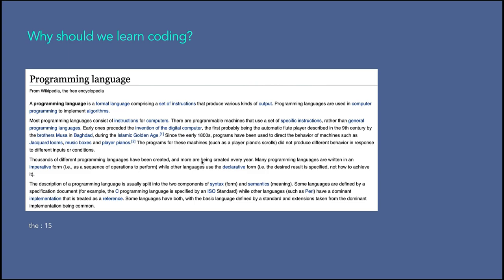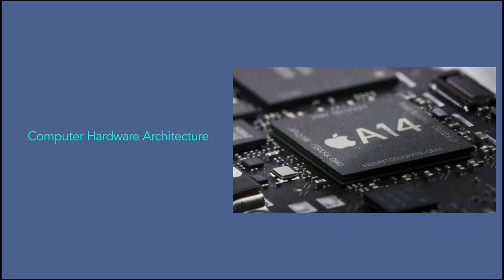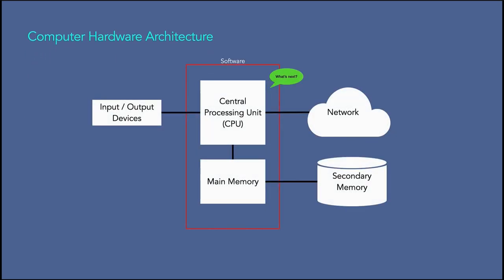Hopefully now you have an idea of why we should learn coding. Before we start learning the language we use to give instructions to a computer, we need to learn a small amount about how computers are built. If you take apart your computer or cell phone and look inside, you will find these main parts. The central processing unit, or CPU, is the part that asks the question 'what's next?' If your computer is rated at 3.0 gigahertz, it means the CPU will ask that question 3 billion times per second.